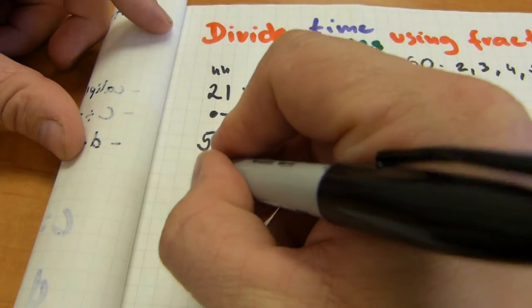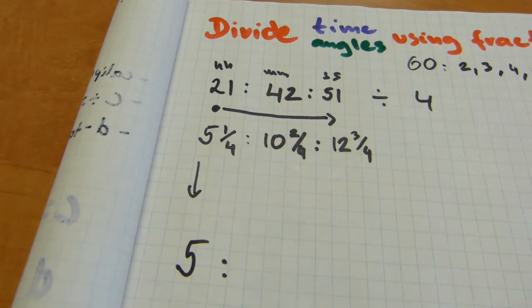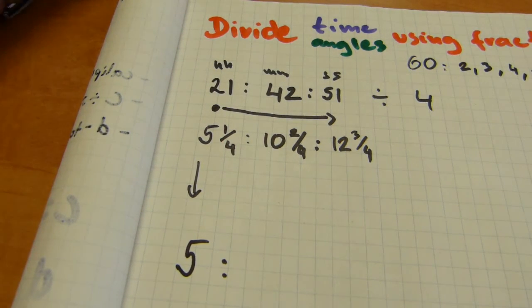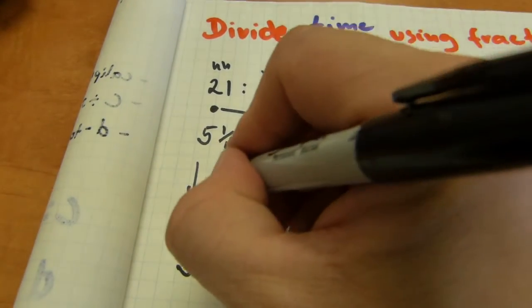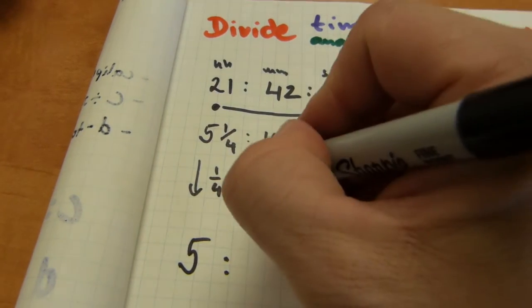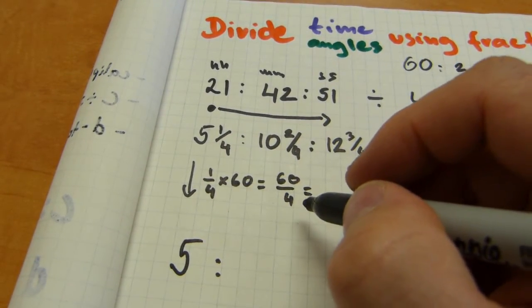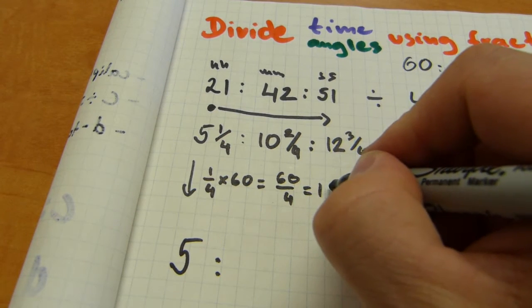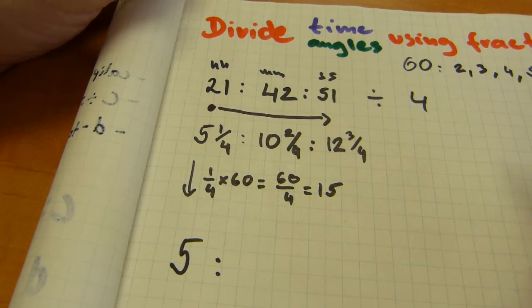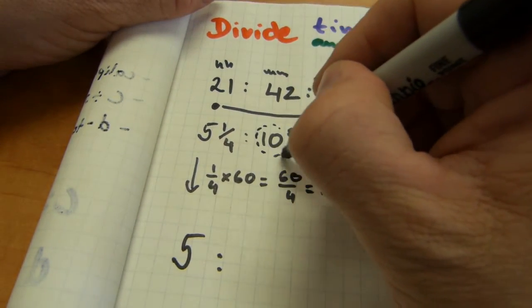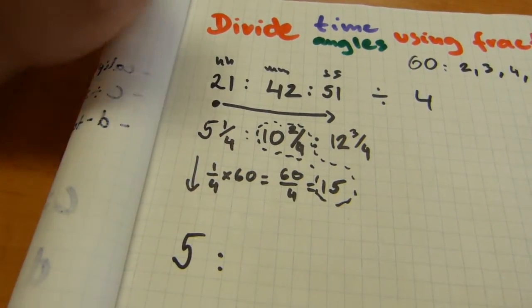Now what we need to do is, this 5 hours drops down here to the final answer and the quarter hours need to be carried over to the minutes column. Of course a quarter hour is 15 minutes but I'll show you how this is done. This is where fraction multiplication comes in. A quarter hour needs to be multiplied by 60. A quarter times 60 is 60 over 4 and 4 goes into 60, 15 times. This 15 needs to be added to the amount already in the minutes column.